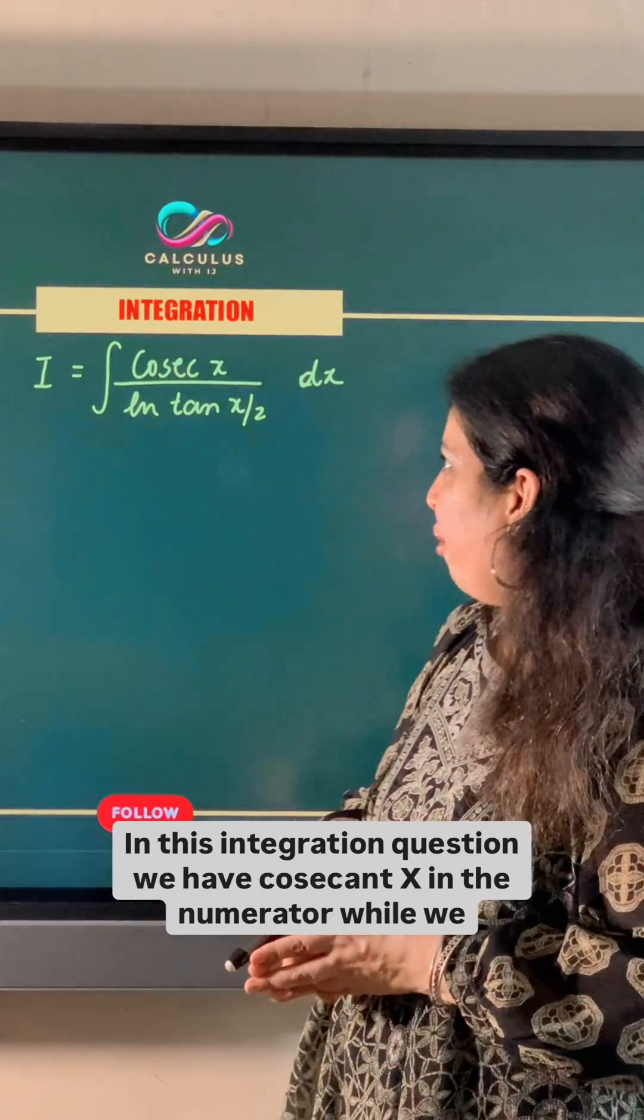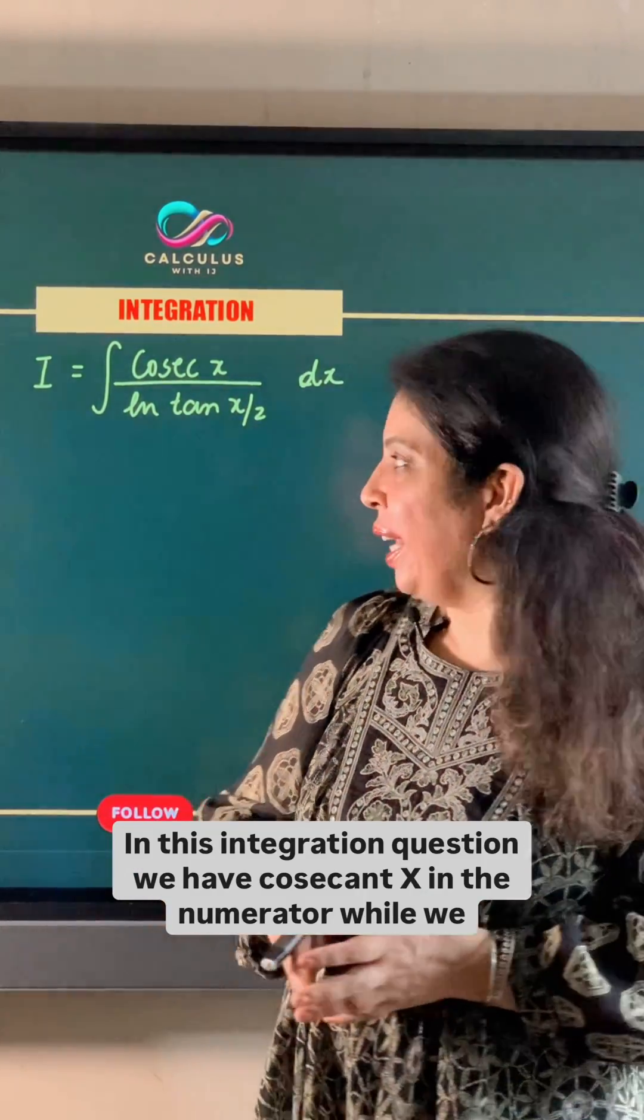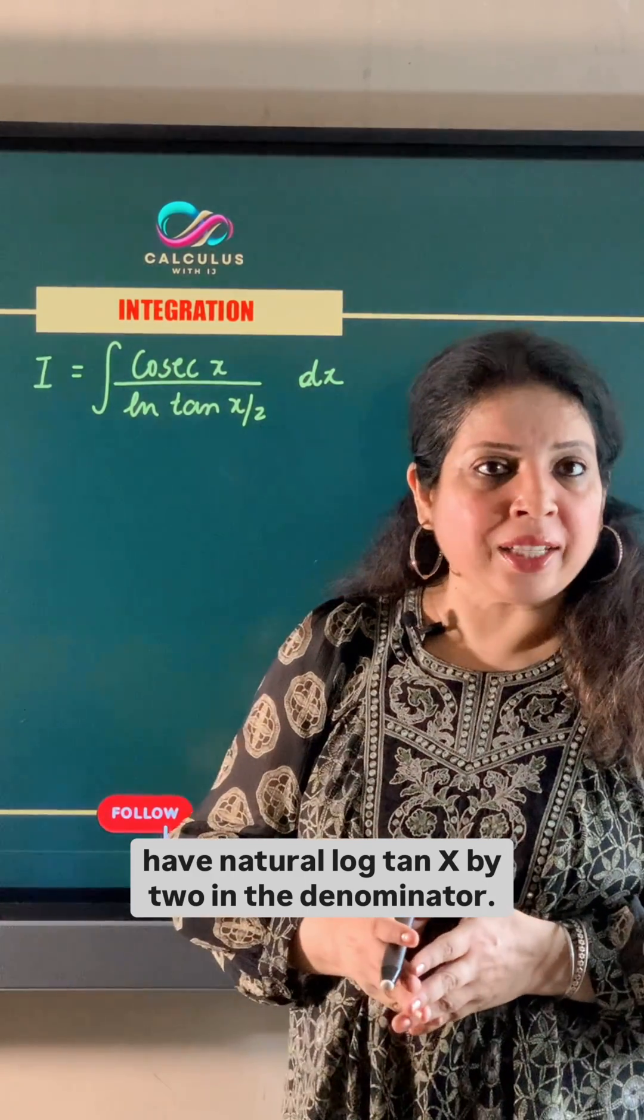In this integration question, we have cosecant x in the numerator while we have natural log tan x by 2 in the denominator.